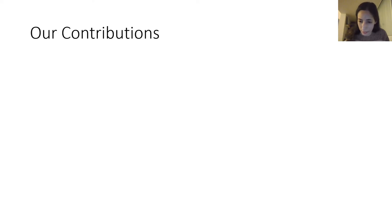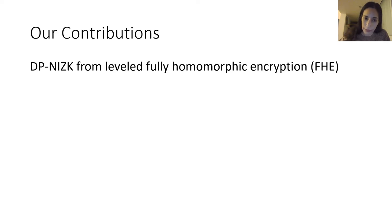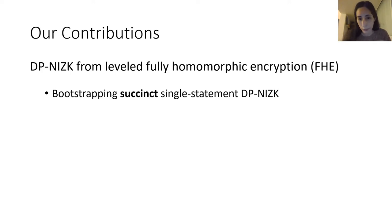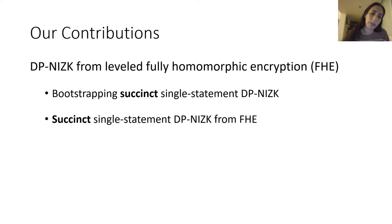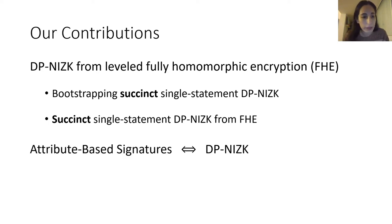Here is our contribution. We show another construction of designated prover NIZK, but instead of using homomorphic signatures, we use fully homomorphic encryption, FHE. More specifically, we take two steps. In the first, we show a generic bootstrapping assuming the single statement DP-NIZK satisfies some succinctness property. Given a succinct single statement DP-NIZK, we can generically bootstrap it to a multi-statement one. Then to complete the picture, we show it is possible to construct a single statement DP-NIZK with succinctness given any fully homomorphic encryption. We also show a two-way equivalence between designated prover NIZK and attribute-based signatures, but will not cover that in this talk.